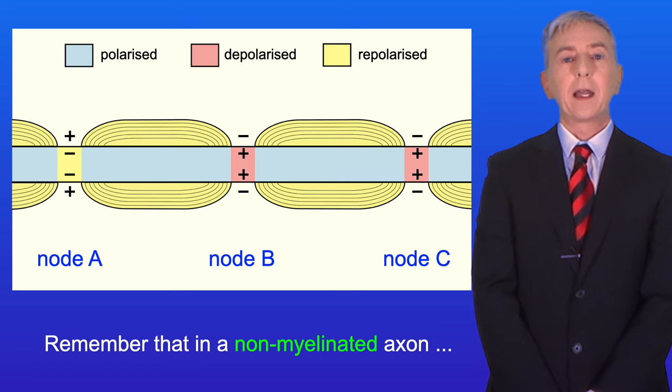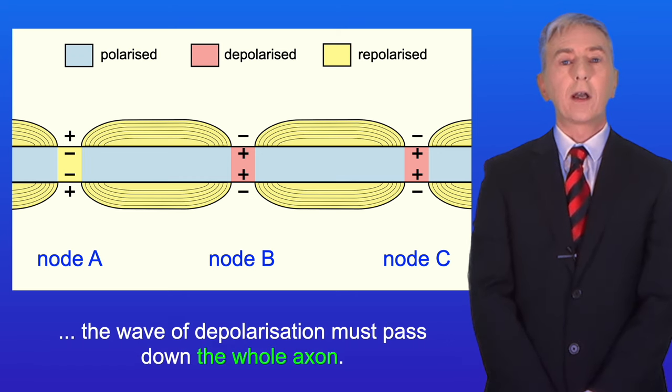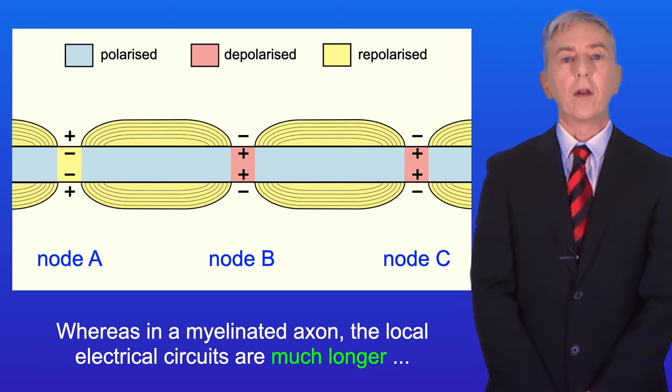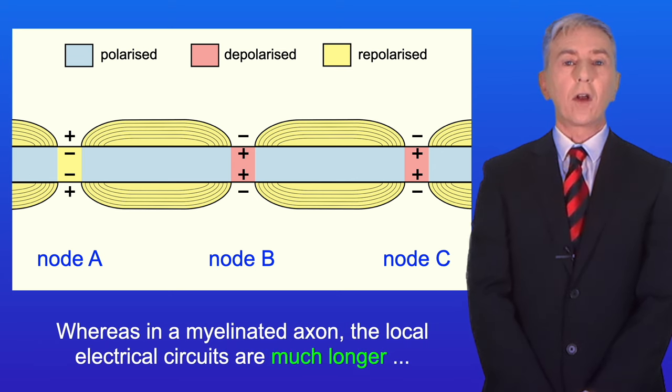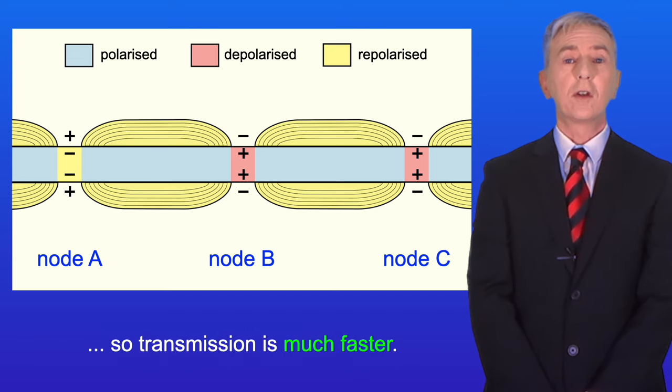Remember that in a non-myelinated axon, the wave of depolarization must pass down the whole axon. Whereas in a myelinated axon, the local electrical circuits are much longer, so transmission is much faster.